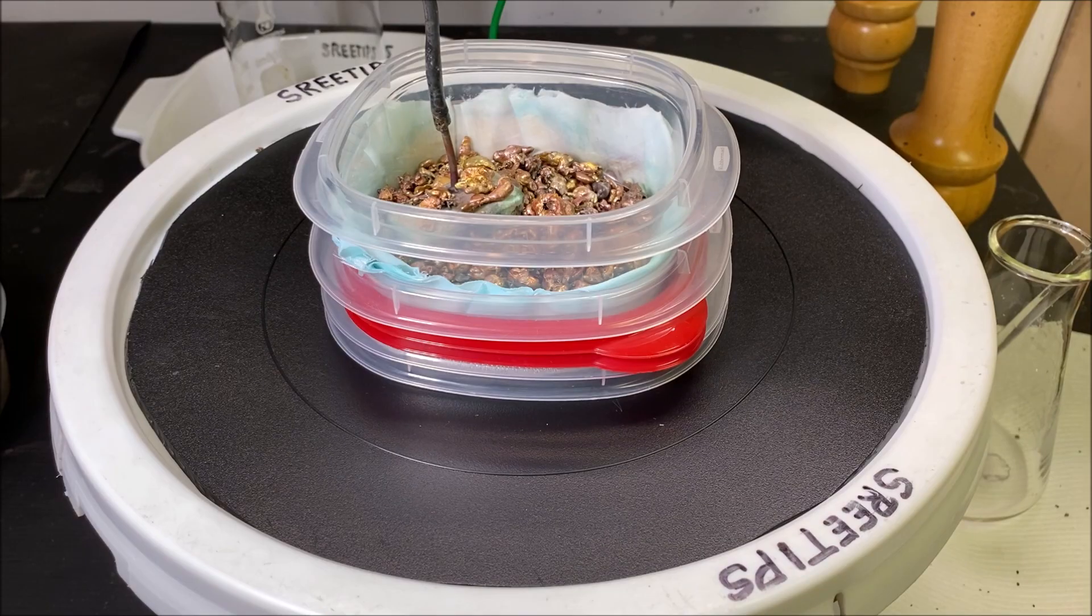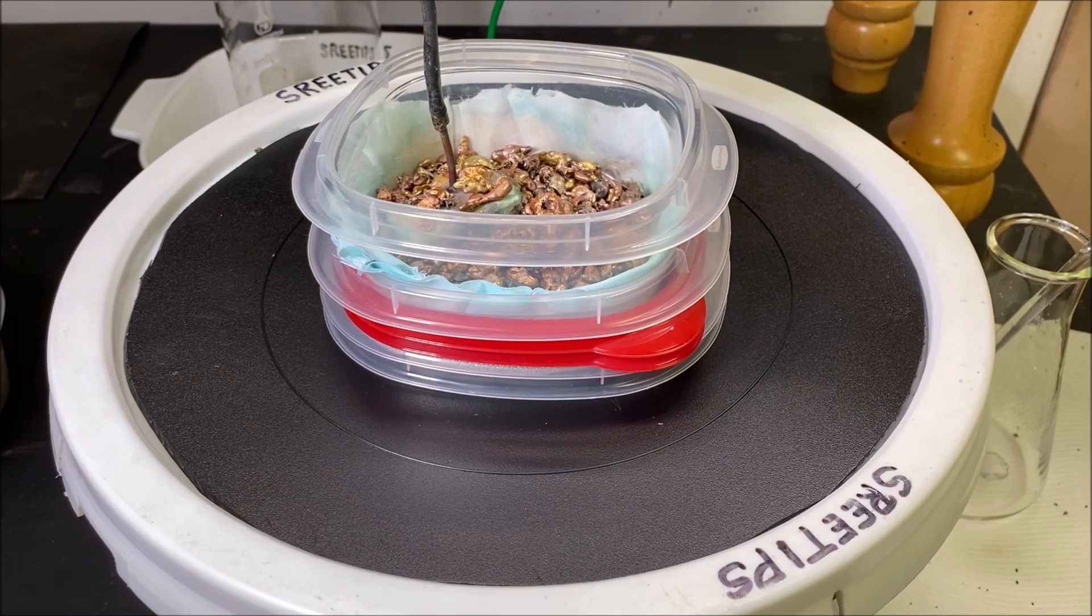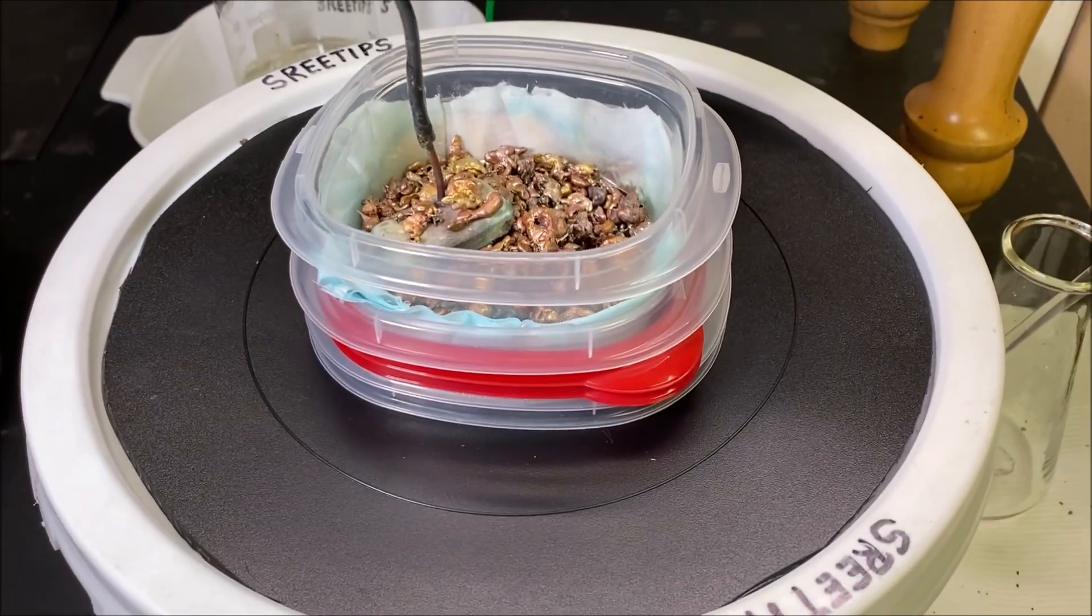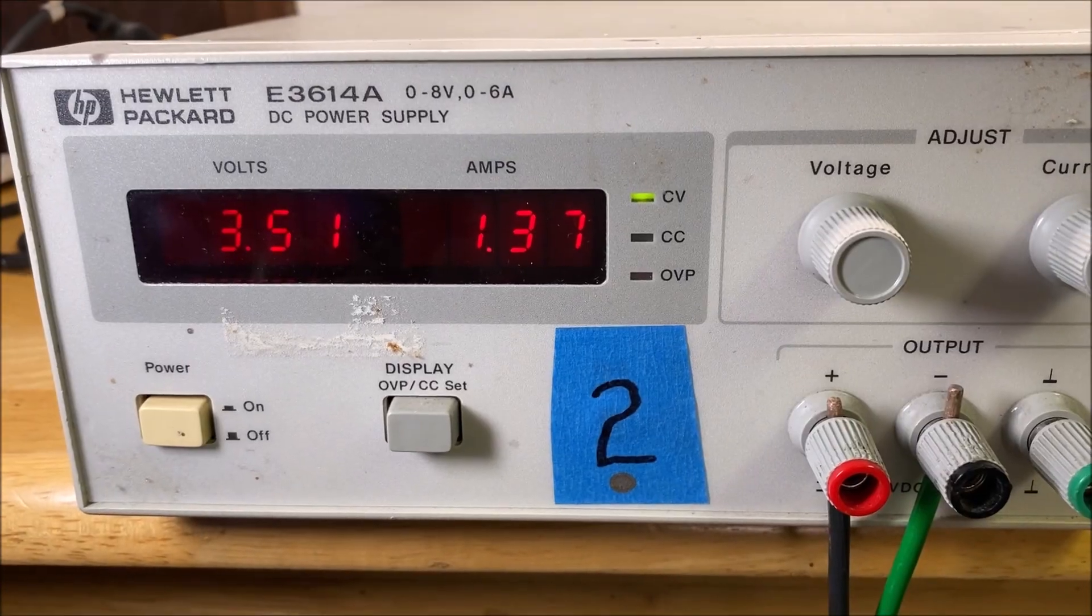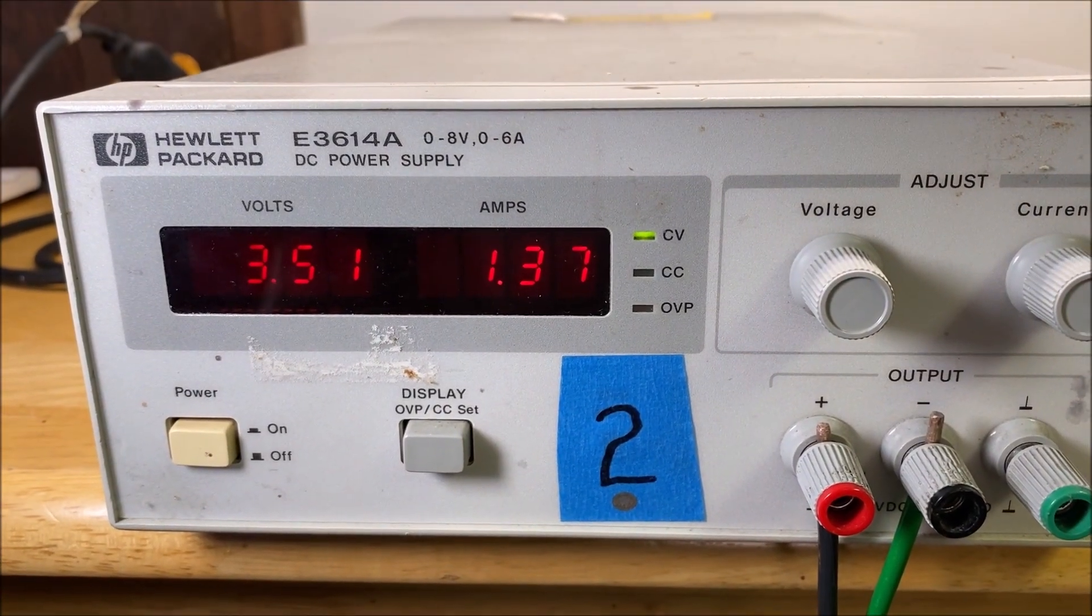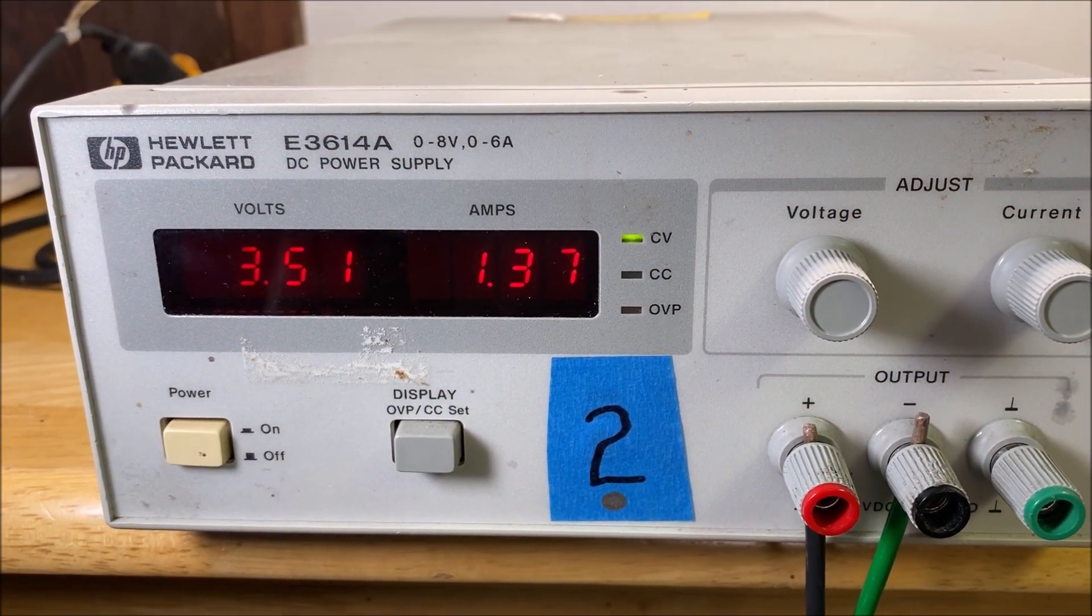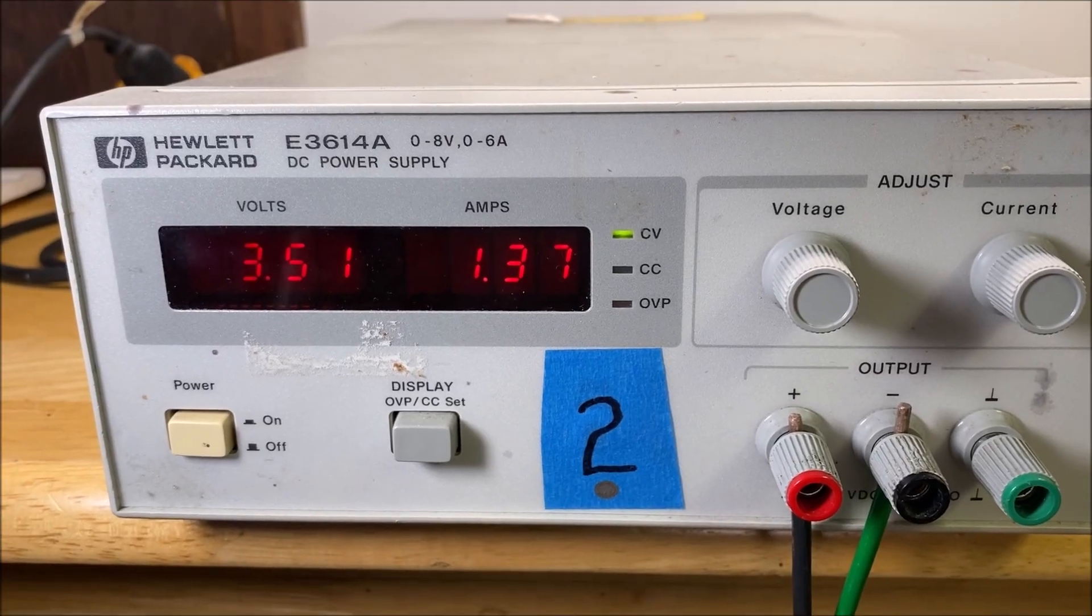Welcome back to my channel Sweet Tips. Here Saturday morning, day six of the silver cell operation. I just wanted to do a quick video here. We've got our voltage at 3.5 volts pulling 1.37 amps.